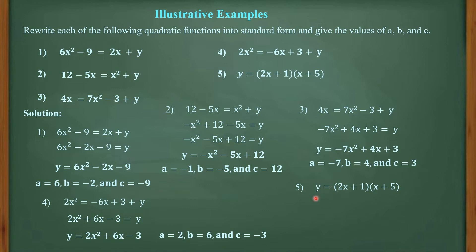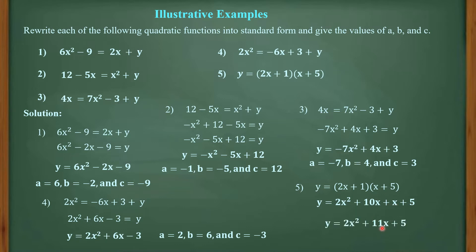For number 5: y = (2x + 1)(x + 5). We apply the FOIL method: 2x × x = 2x², 2x × 5 = 10x, 1 × x = x, 1 × 5 = 5. Combining like terms: 10x + 1x = 11x. So y = 2x² + 11x + 5, which is already in standard form. Thus, A = 2, B = 11, and C = 5.